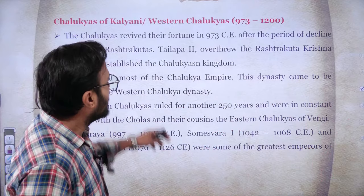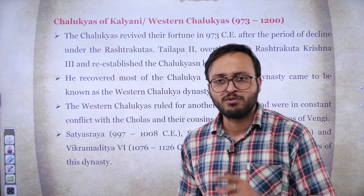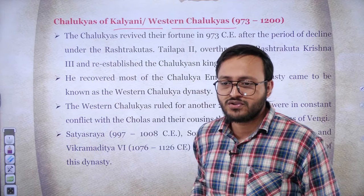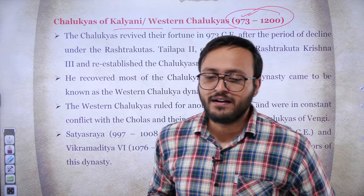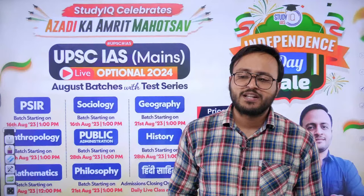The Chalukyas of Kalyani — also known as the Western Chalukyas — are a proper medieval dynasty ranging from 973 AD to 1200 AD. This topic has been inserted here so there is no confusion when studying them in upcoming medieval lectures. In summary: the Chalukya dynasty of Badami started with Jai Simha, the real founder was Pulakesi I, the most famous ruler was Pulakesi II who defeated Harshavardhan, his brother Vishnuvardhana established the Vengi Chalukya dynasty, and the last ruler was Kirtivarman II.